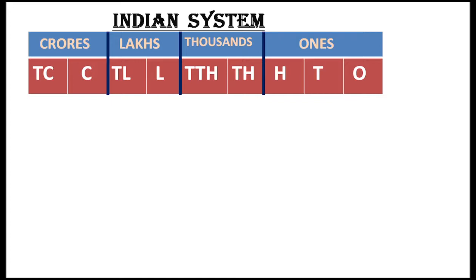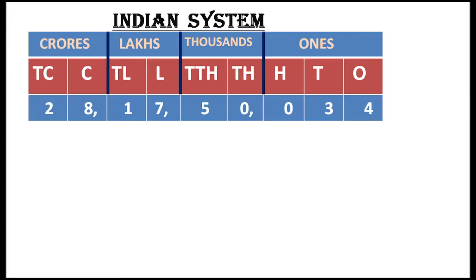I am going to take a number according to the Indian system. See here: 2, 8, 1, 7, 5, 0, 0, 3, 4. I simply took one example and used commas to separate the periods.